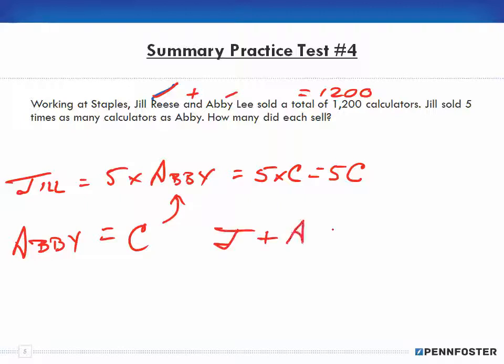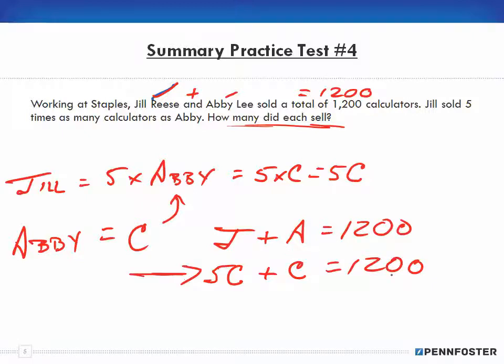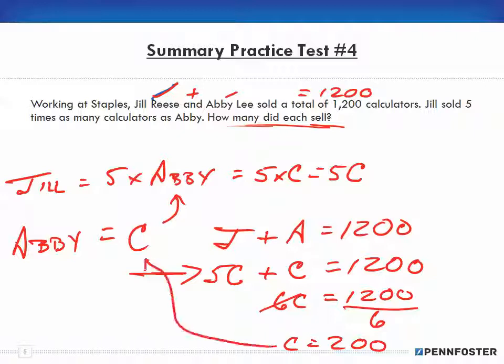Now we go back here and remember it's Jill plus Abby equals 1,200 calculators, and we're asking how many did each sell. So we just replace the variables for what Jill and Abby sold. If Jill is 5C and Abby is C and they both sell 1,200, all we need to do - that's our equation right there - is the math. 5C plus 1C is 6C equals 1,200. To isolate the variable we divide both sides by six, and that gives us C equals 200. So that's 200 for Abby. And for Jill that's five times - replace the C with the 200 - and that equals 1,000 for Jill. So Abby sells 200, Jill sells 1,000.